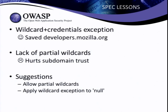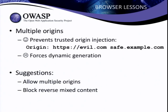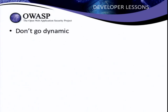From the browser's point of view, multiple origins should be supported, because that would reduce the number of people forced to dynamically generate the origin header. Also, something browsers could do without causing massive breakage is to block what I've called reverse mixed content — blocking CORS access from an HTTP site to an HTTPS site. That would help out the vast number of sites that forget to verify the protocol using CORS. If you're a developer, the key takeaway is: if you can, just don't dynamically generate this header — hard-code it. When you have no choice, validate the origin with a huge amount of paranoia, and don't forget to specify Vary: Origin.